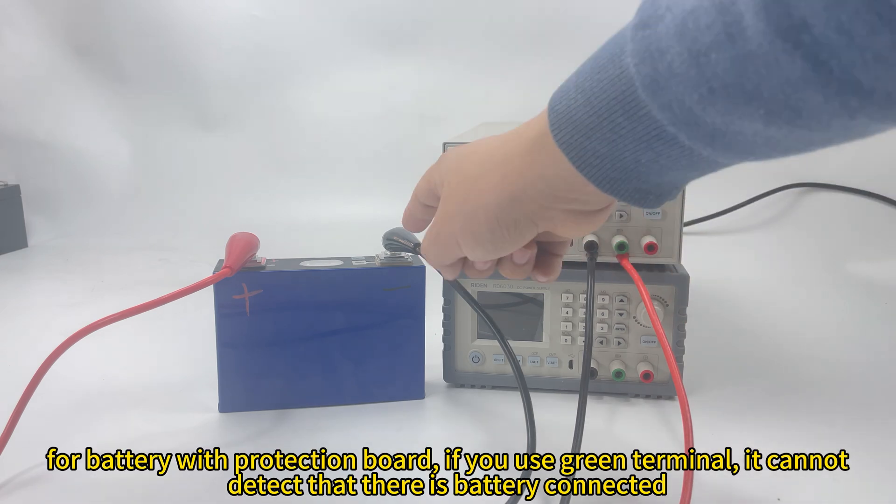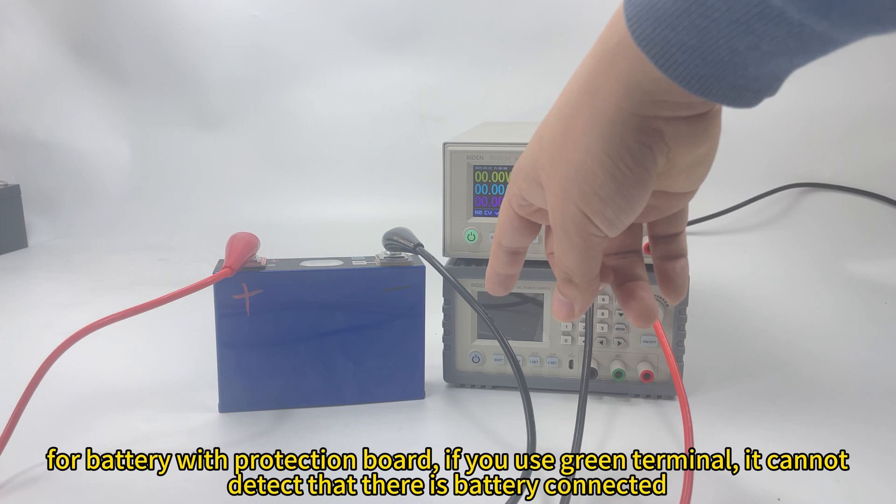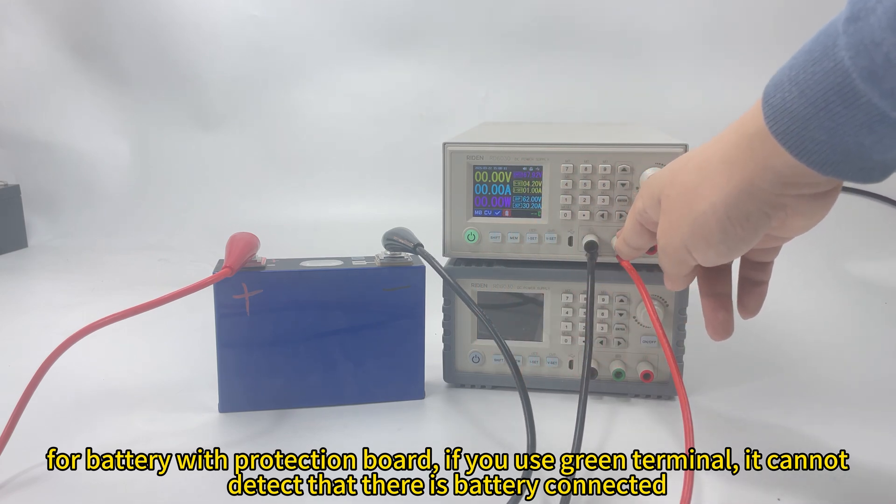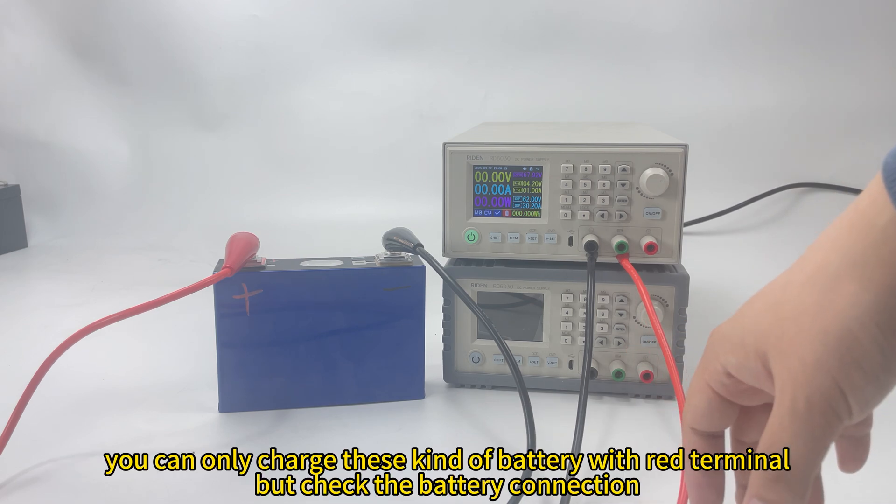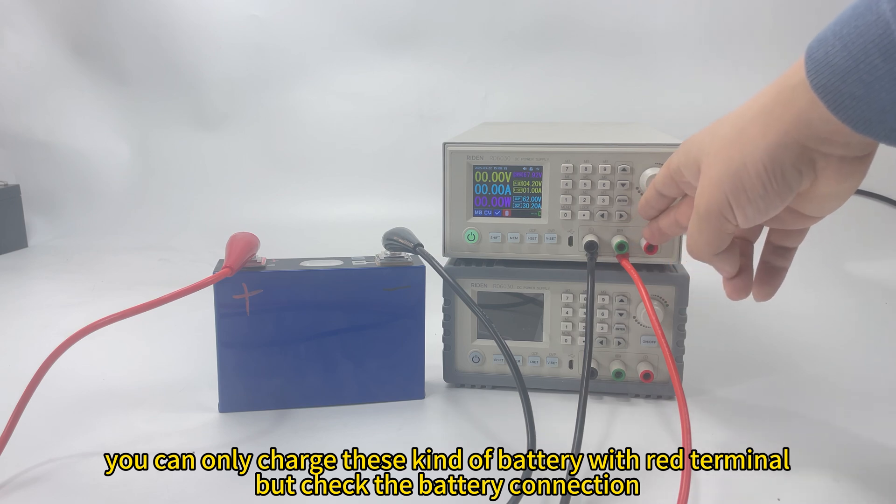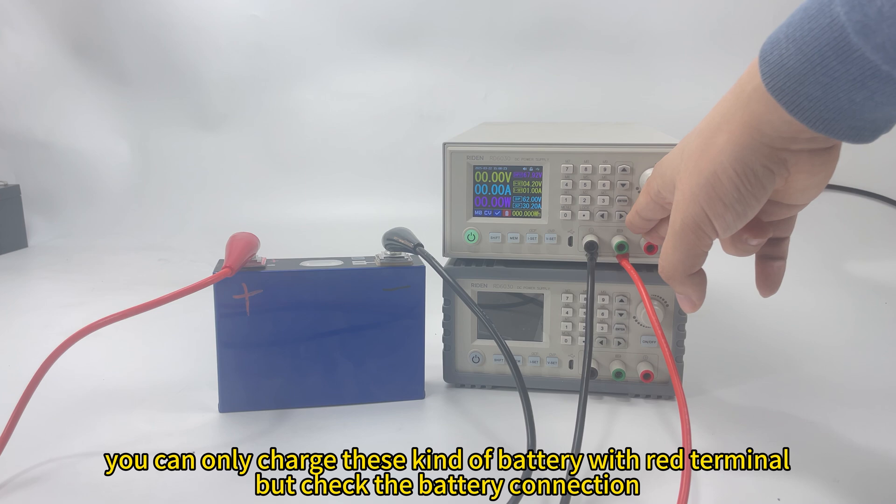For battery with protection board, you can only use the red terminal to charge the battery with the protection board. In this way, you need to notice the connection. Do not reverse the connection.